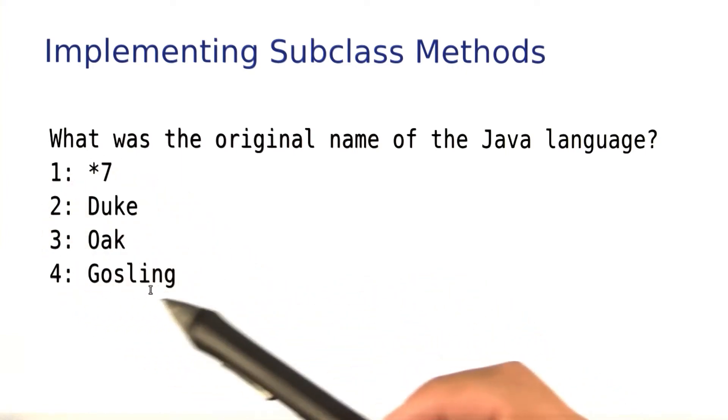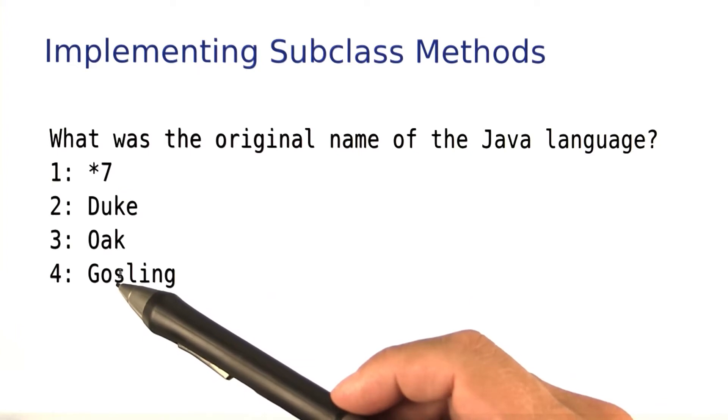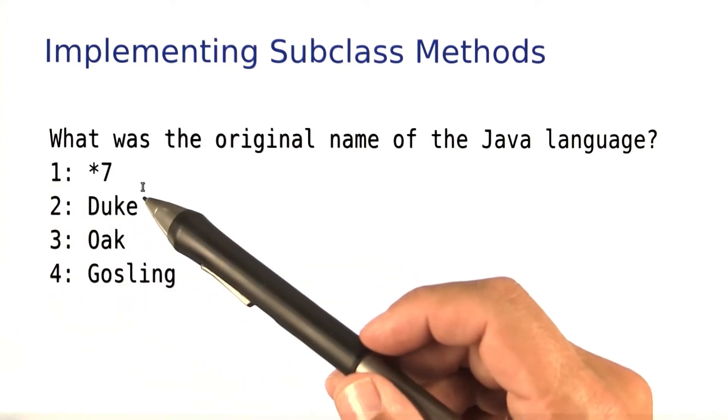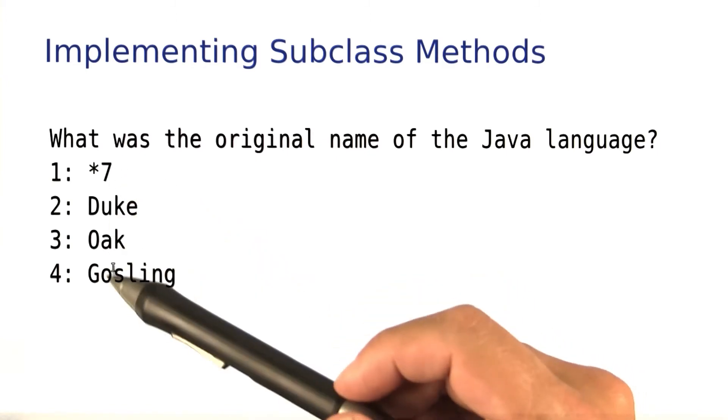It's easy enough to do this part. All we have to do is loop through the choices and print them with a number in front of them. And since this has nothing to do with learning about inheritance, I'm just going to give you this code.